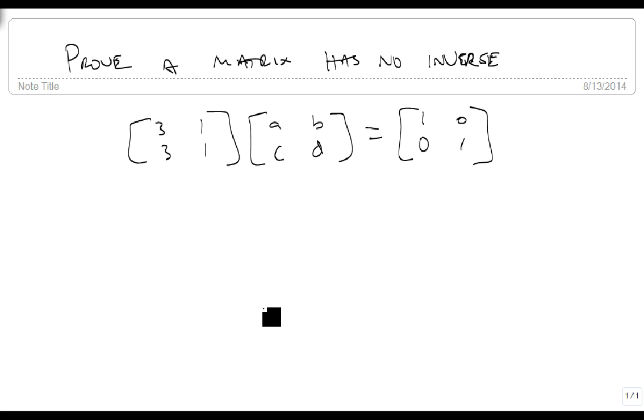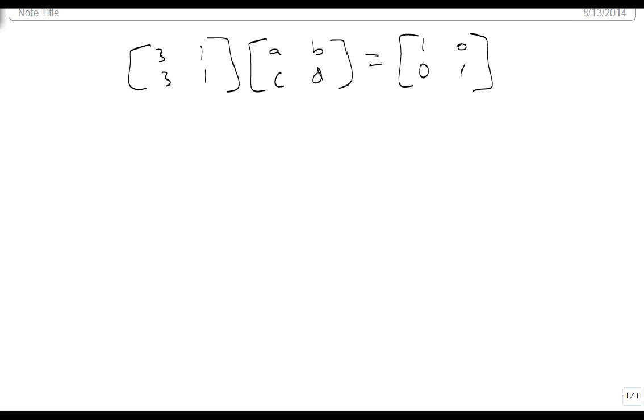So we're going to do our matrix multiplication 2 by 2 by 2 by 2 equals 2 by 2. So we're going to get first row, first column, gives me 3A plus 3C.